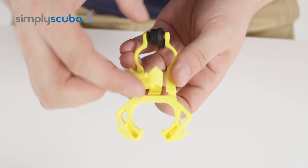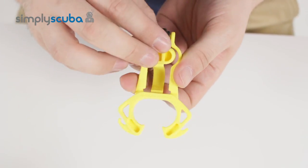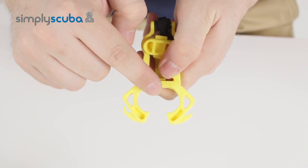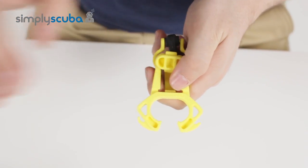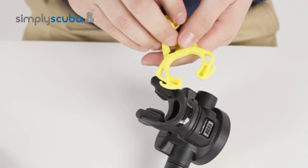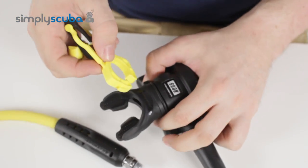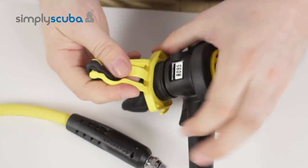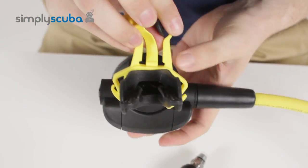Now how this works is you have this section here which just retracts and then this is where you put the mouthpiece of your Octo. If I grab an Octo now, so what you do is you clip those two wings over the mouthpiece of your second stage like that